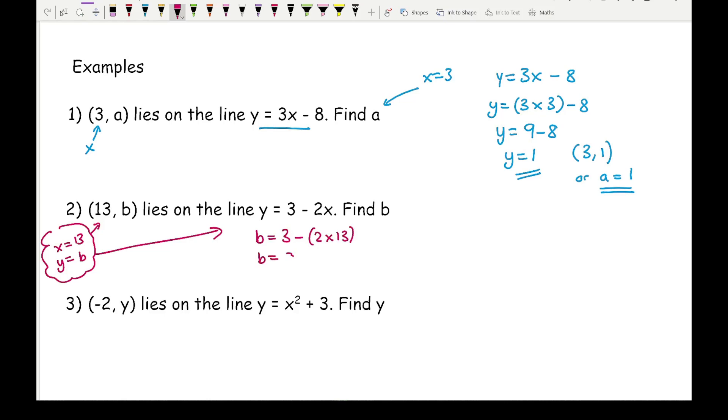So I've got b equals 3 minus 26. 3 minus 26 is minus 23, so b equals minus 23. I can write that as a coordinate, so it's (13, -23). Now it doesn't say write your answer as a coordinate, it just says find b. So this should be your correct answer, but if a question asks you to find the coordinate, then you would write it as a coordinate.